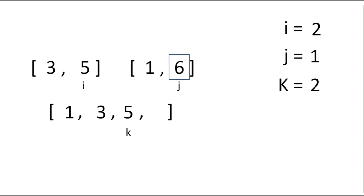After adding five we increment i — it becomes two — and since there is no index in the left half equal to two, we're finished with the left half. We increment k to move to the last index. Only one element remains, which is six, so we simply add it to our merged array. Now we've finished sorting these two halves into a merged array.